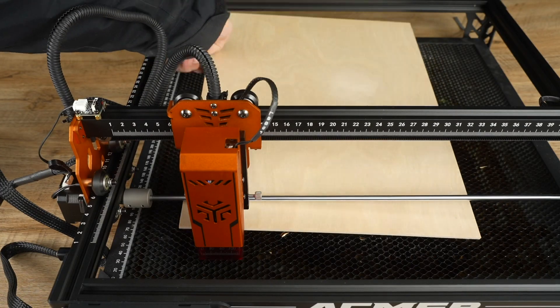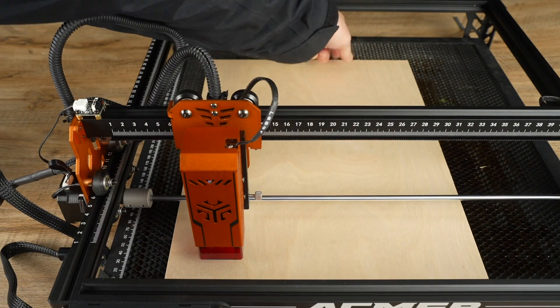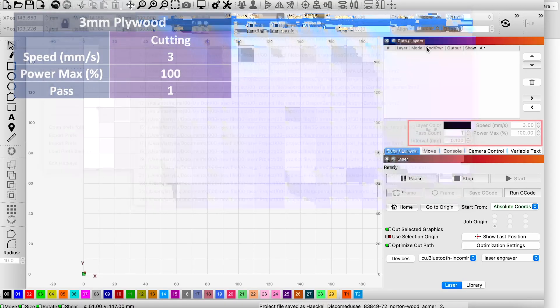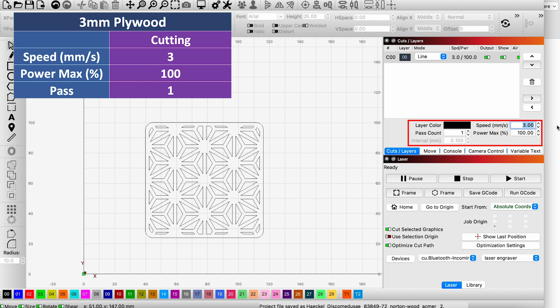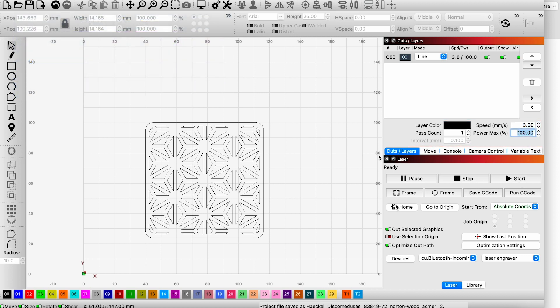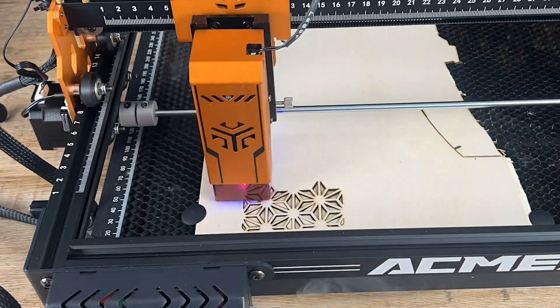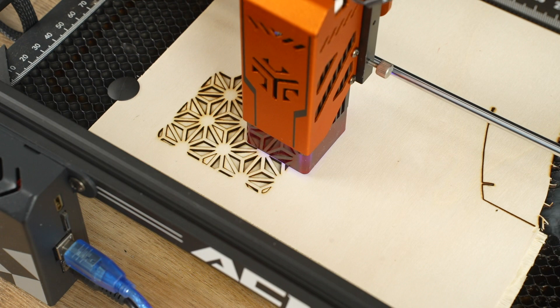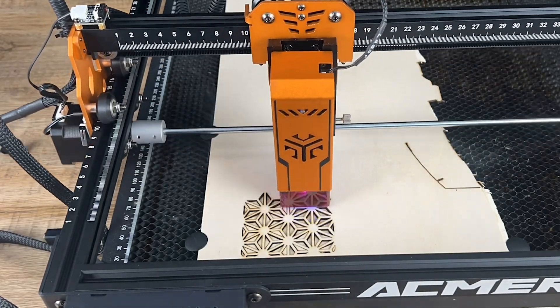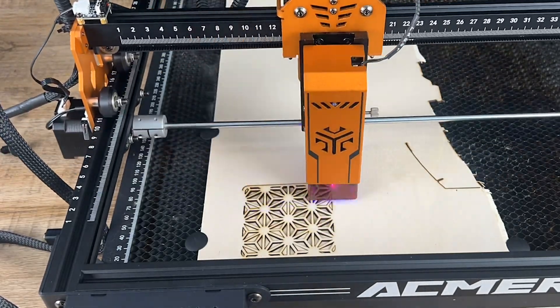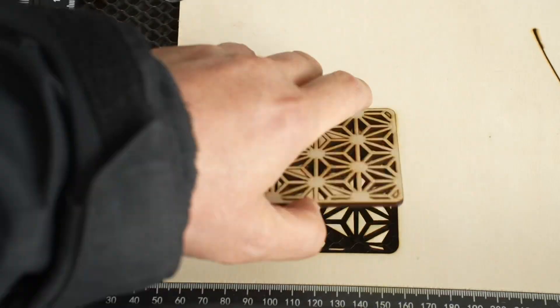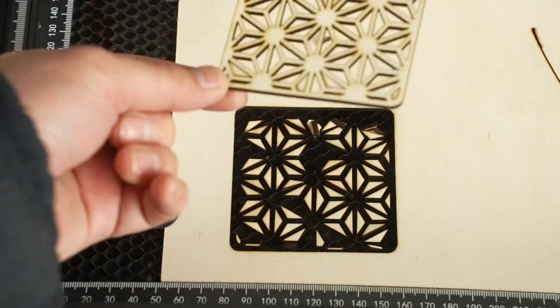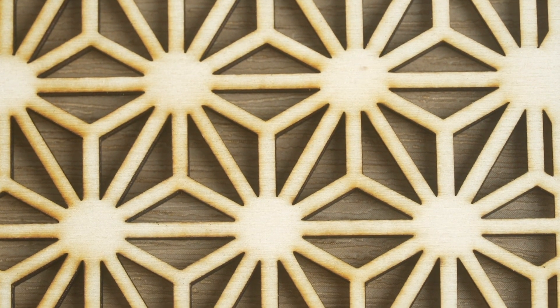Finally, we attempted to make a coaster using 3mm plywood. I adjusted the speed to 3mm per second and set the power to 100%. Since there is no air assist, you may notice a burn mark on the edge of the plywood, but it's still acceptable.